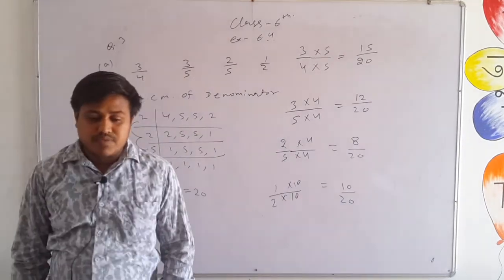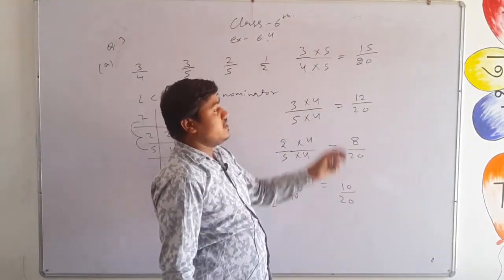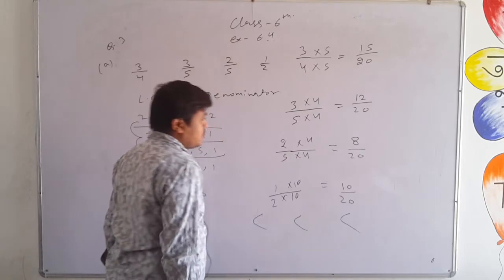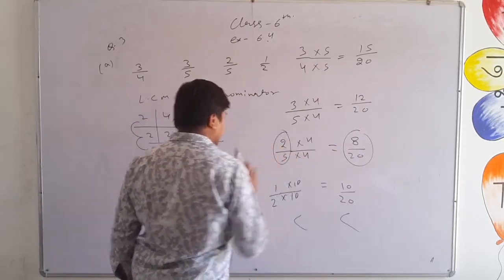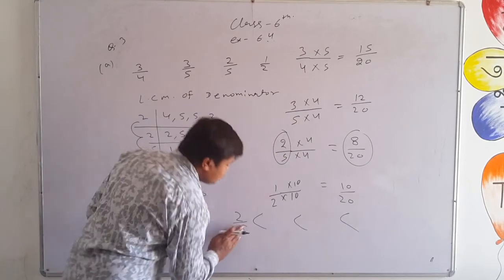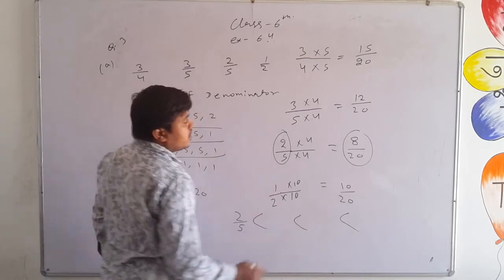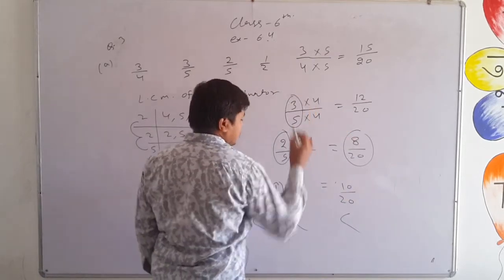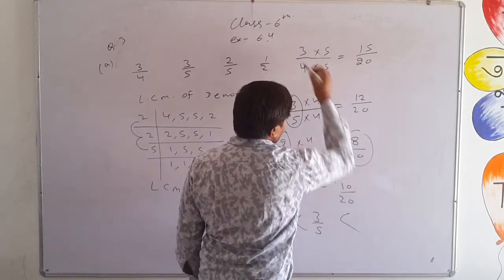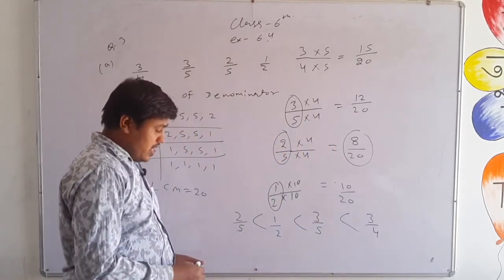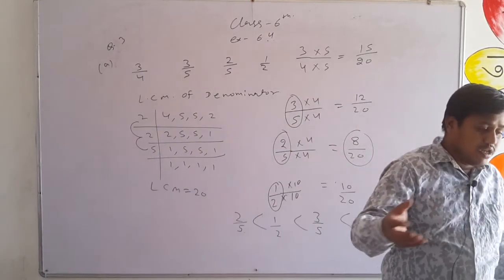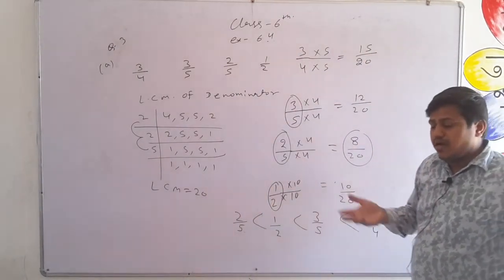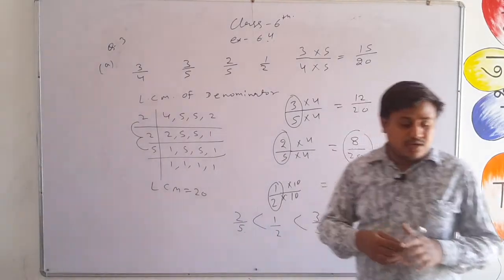Now all denominators are the same — so the fraction with the larger numerator is larger. In ascending order: smallest numerator first — 8 (which is 2 upon 5), then 10 (which is 1 upon 2), then 12 (which is 3 upon 5), and finally 15 (which is 3 upon 4). For the remaining three questions do them yourself. For the descending order part, take LCM the same way but write from largest to smallest — only the sign changes.